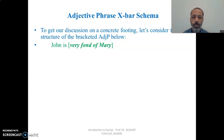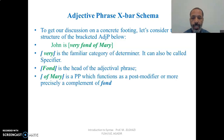To implement the X-bar schema on the adjective phrase, we need an adjective phrase in which we have a specifier, a head which is an adjective, and a complement. If we take the example 'John is very fond of Mary,' the phrase 'very fond of Mary' is an adjective phrase where 'very' is the specifier, 'fond' is the head adjective, and the preposition phrase 'of Mary' functions as a postmodifier — a complement in generative syntax.